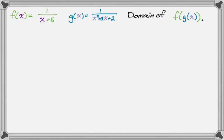So let's see the problem. We have f(x) is 1 over x plus 5, so you'll notice there I made the x's purple. I'm going to try to color code on the way through. G(x), so different color x because it's kind of a different x, is equal to 1 over x squared plus 3x plus 2, and then we're going to find the domain of f of g of x.